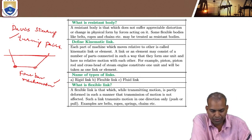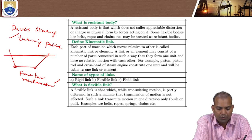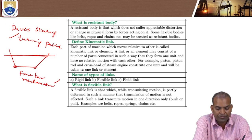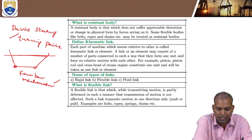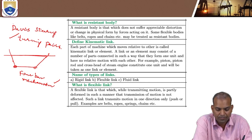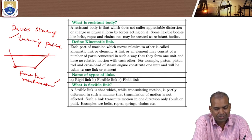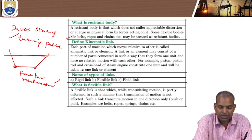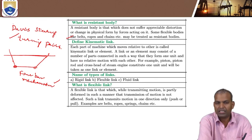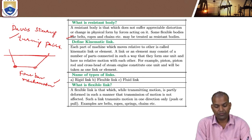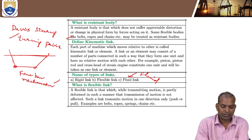Coming to more fundamentals: what is a resistant body? A resistant body is one which does not suffer appreciable distortion or change in physical form by forces acting on it — meaning it has resistance to deformation. Examples of resistant bodies include belts, ropes, and chain drives. Links in mechanisms can be rigid links, flexible links, or fluid links. In our kinematics study, we follow rigid links.